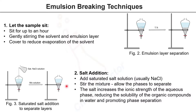For salt addition, make a saturated solution of sodium chloride and add it to the emulsion, then stir the reaction mixture and allow the phases to separate. Adding a saturated sodium chloride solution to the emulsion can increase the ionic strength of the aqueous layer.